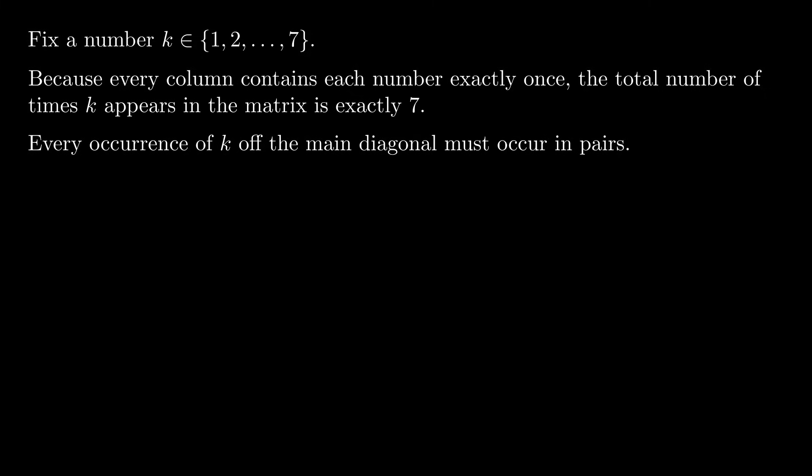In other words, k must appear an even number of times outside the main diagonal. Now we have established that k appears exactly 7 times in the matrix. So k must appear an odd number of times in the main diagonal. This is true for all k between 1 and 7.